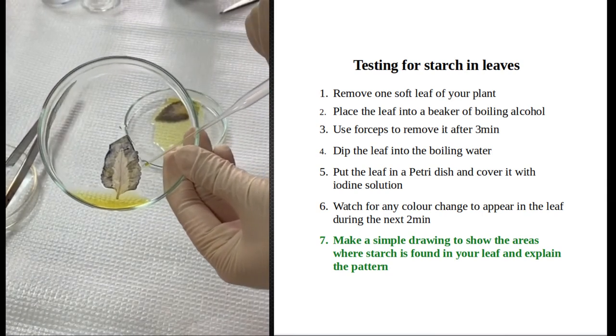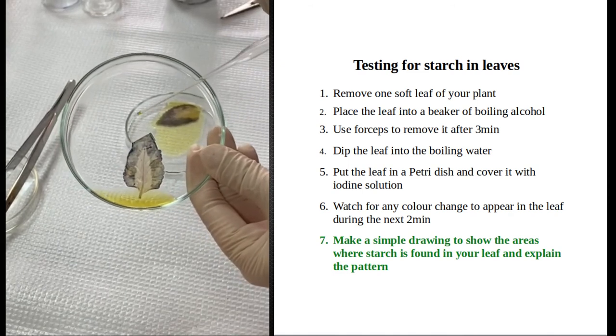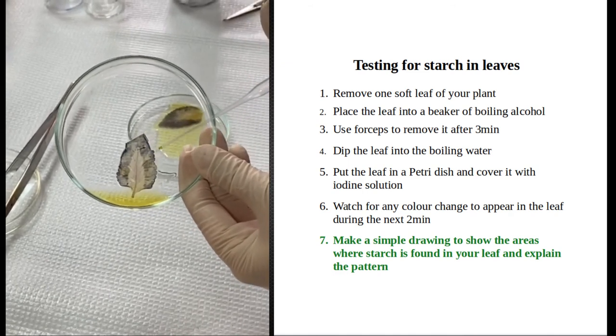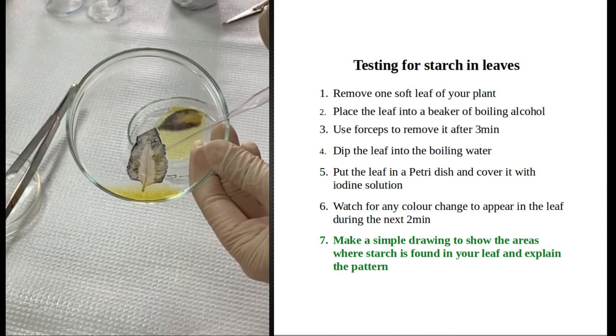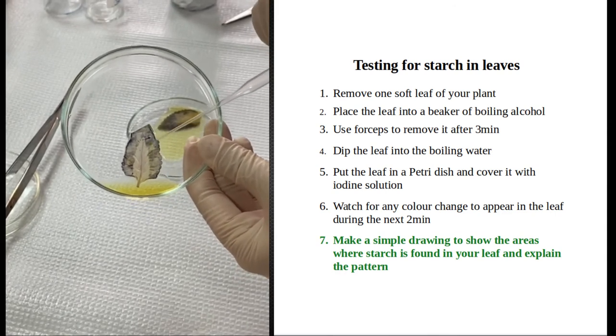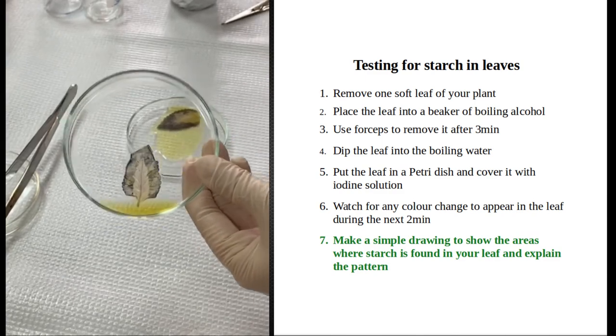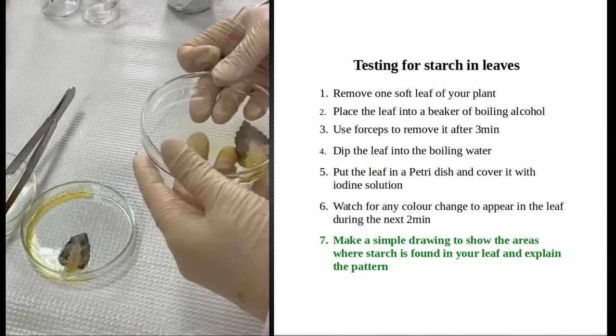When I added the iodine, I have proved that the formation of starch has occurred only in the green area. Therefore, photosynthesis has occurred only on the periphery, and the absence of chlorophyll did not allow photosynthesis to take place. The same result was observed with the second leaf.